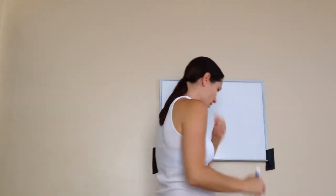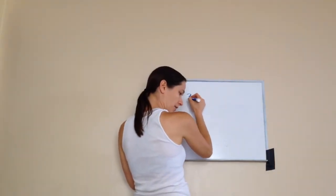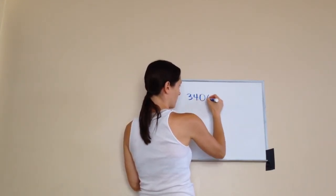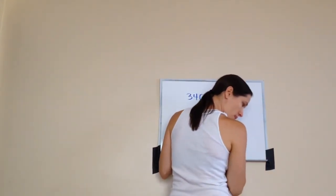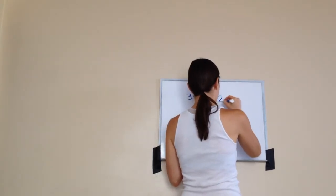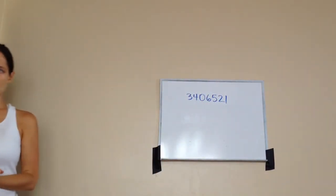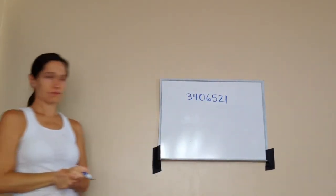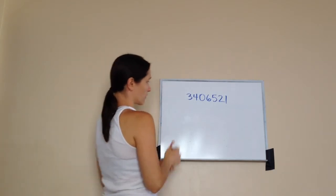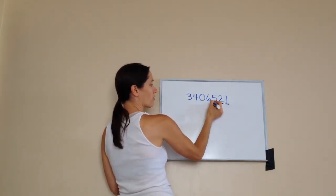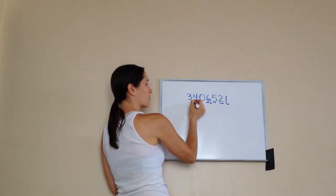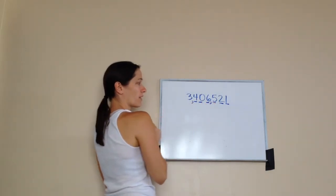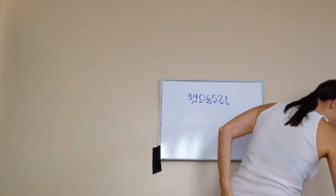Now, where would I place commas here? Where would I place commas here, Isaac? There'd be a comma between the six and the five. Very good — so he'd count one, two, three, comma. And then between three and four — one, two, three, comma. Very good, he did it exactly right.